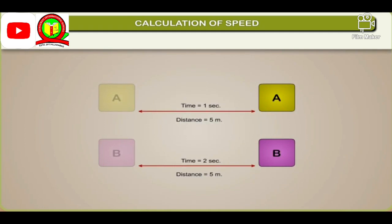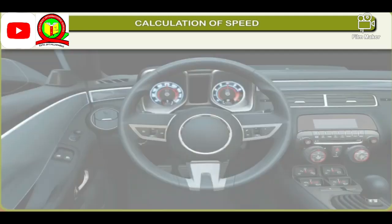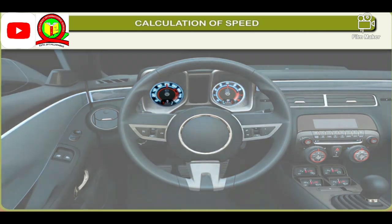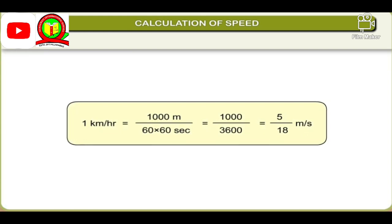Unit of speed: The SI unit of distance is metre and time is second, so the SI unit of speed is metre per second. Other units are centimetre per second and kilometre per hour. If you are inside a vehicle such as a car, you can find out how fast you are travelling using the speedometer on the dashboard, which gives speed in kilometres per hour. 1 kilometre per hour = 1000 m ÷ 3600 s = 5/18 metres per second.